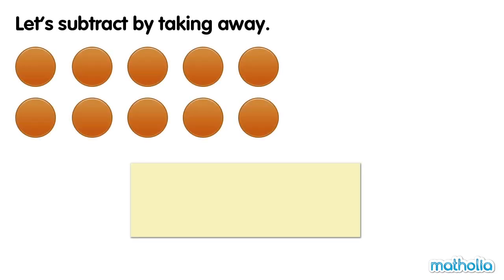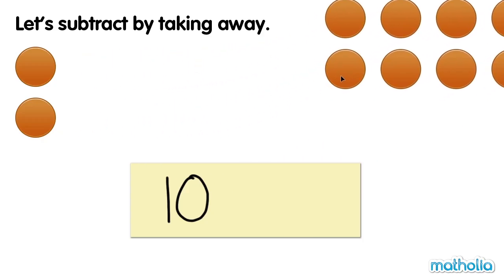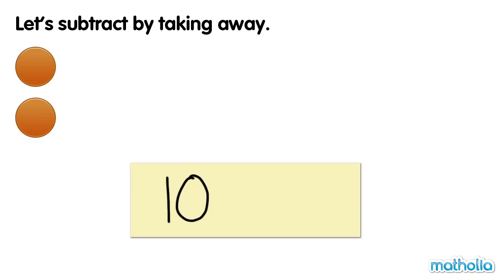How many counters are there? There are ten counters. I take away eight counters. How many counters are left? There are two counters left. Ten take away eight equals two. Or ten minus eight equals two.